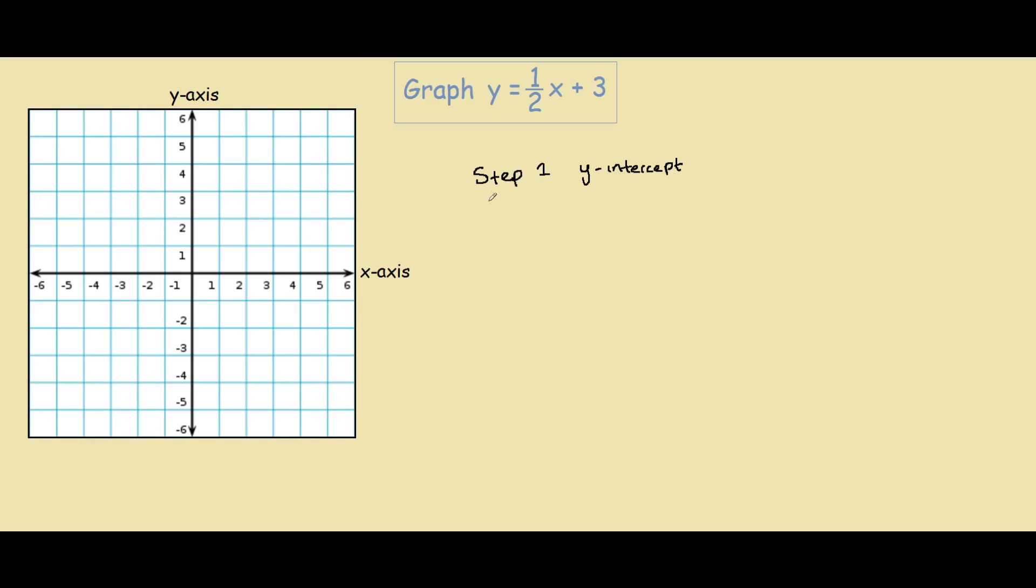We know that the y-intercept lies on the y-axis somewhere, so that means x equals zero. If we know x equals zero, we can substitute x equals zero into our equation to find the y-intercept.